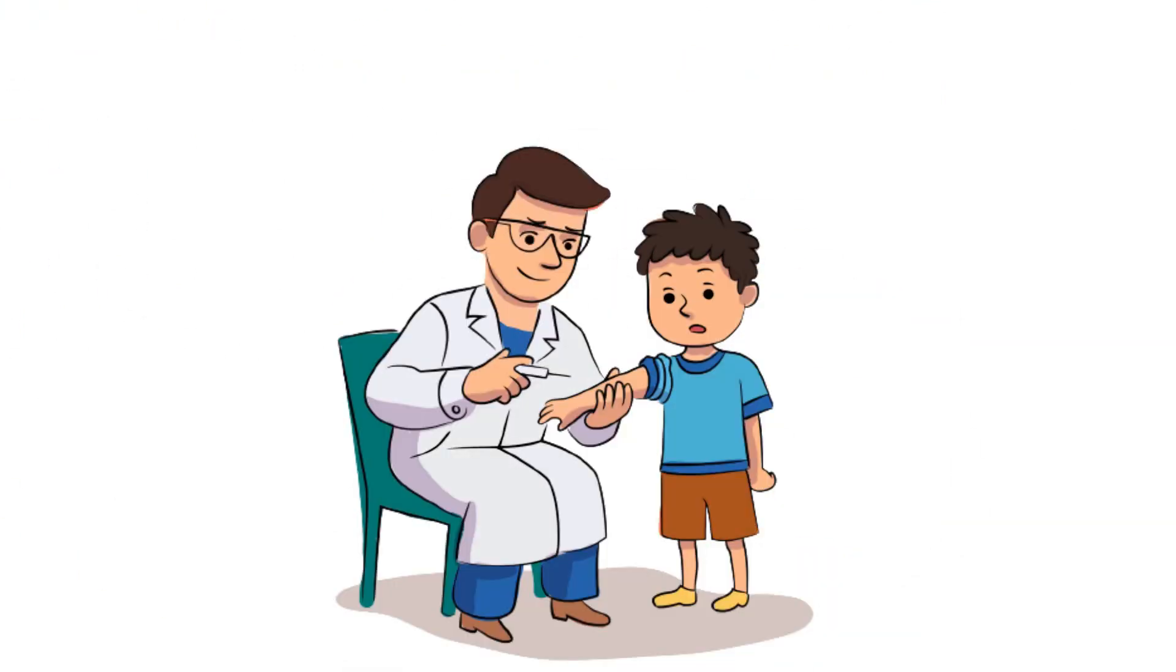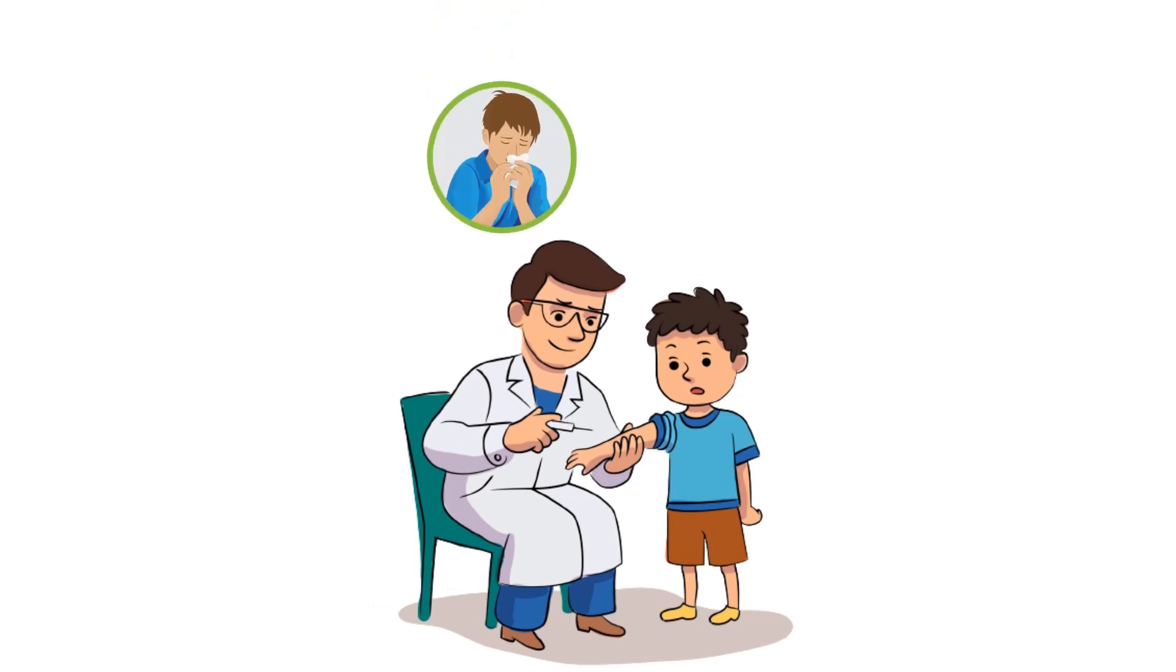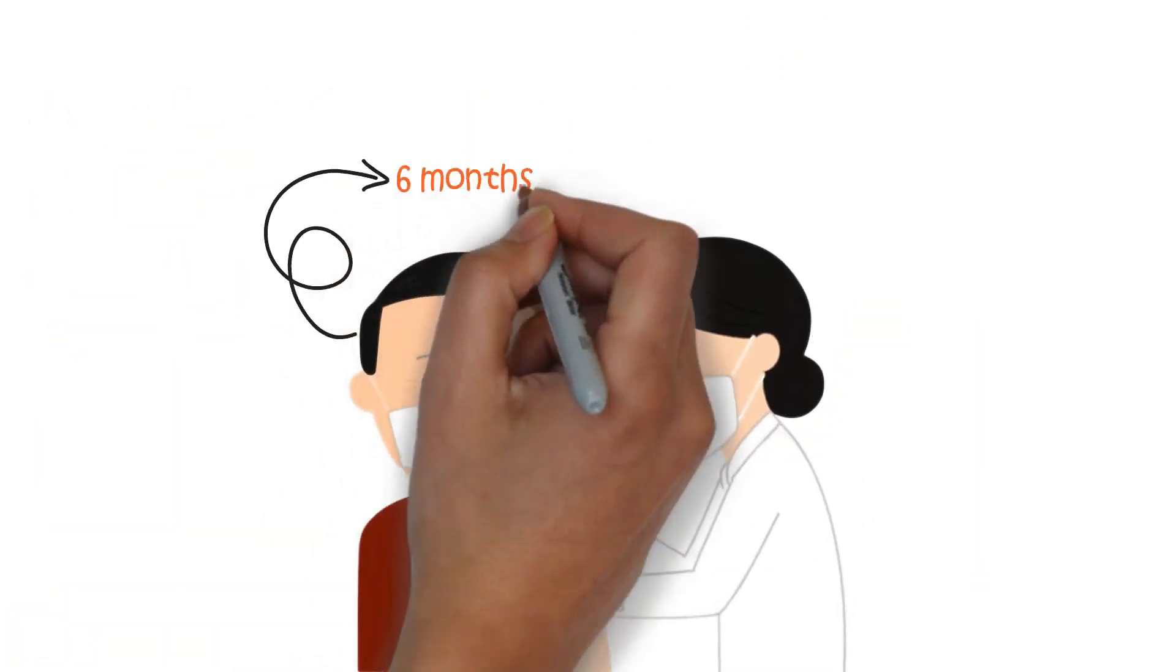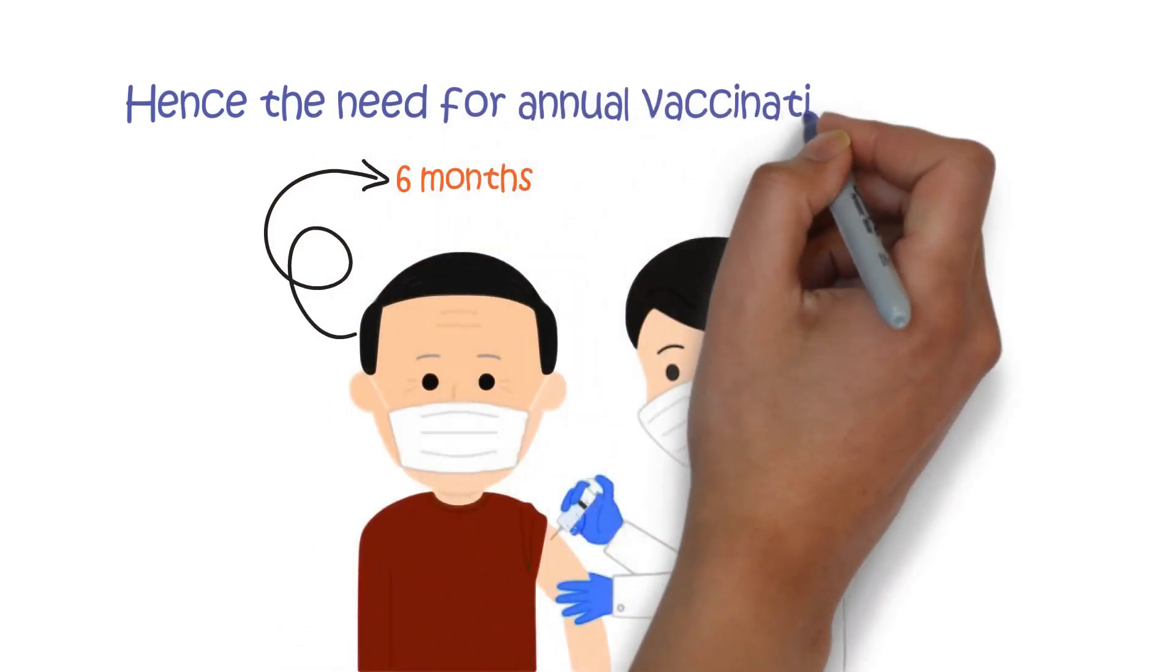Immunization through the flu jab reduces the risk of acquiring the flu and also diminishes the likelihood of experiencing severe flu-related illness. The protection offered by the flu jab typically spans about six months, hence the need for annual vaccination campaigns.